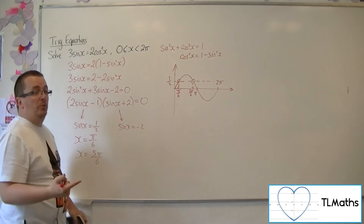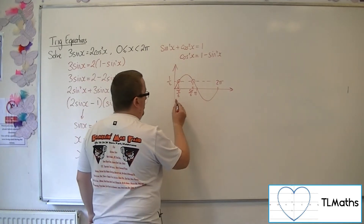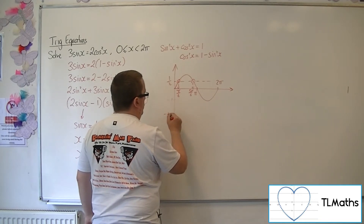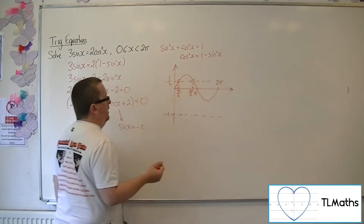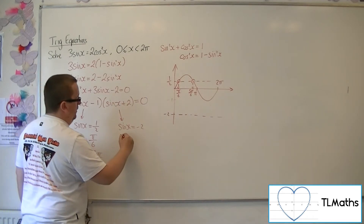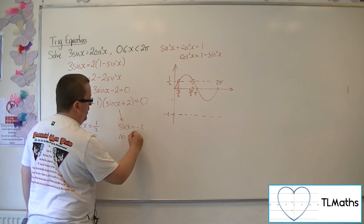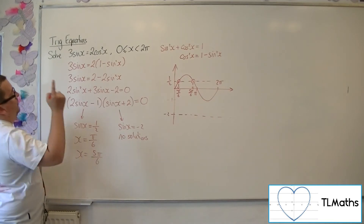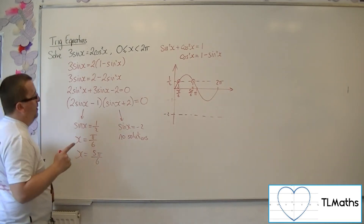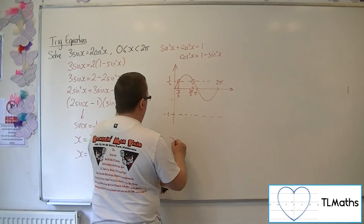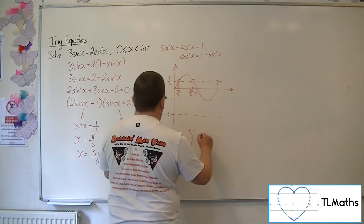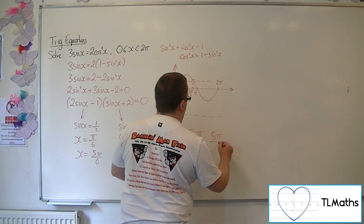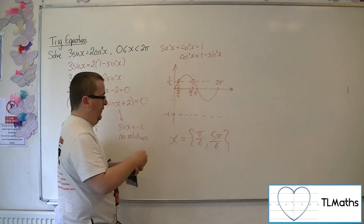Now sine x equals minus 2. Well, the lowest point of sine is minus 1, so minus 2 is all the way down here, and so there are no solutions to this equation. So the only solutions to the original problem between 0 and 2 pi are pi over 6 and 5 pi over 6.